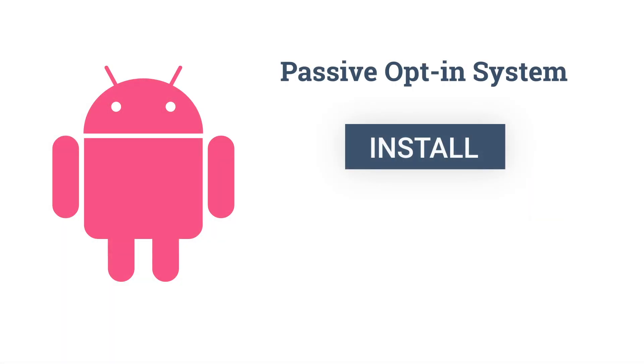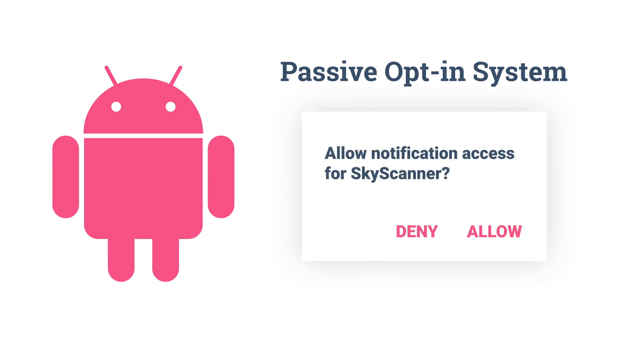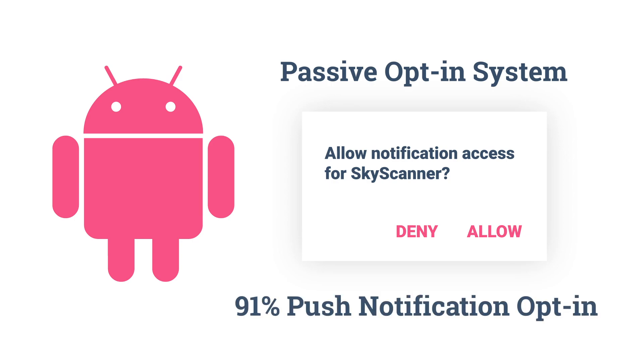Depending on which operating system you have chosen to run your app on, you may be subject to a permissions process, meaning you need to ask your users for the right to send them notifications. The processes of Android and Apple differ, and so do their notification opt-in rates. Android runs a passive opt-in system that requires users to grant permission before installing the app. To deny permission, users face a manual opt-out process. As a result, Android has a 91% push notification opt-in rate.